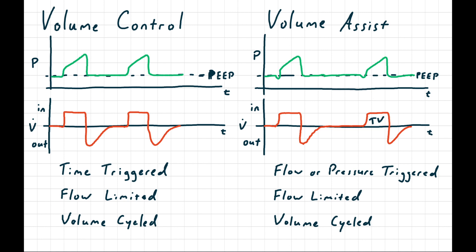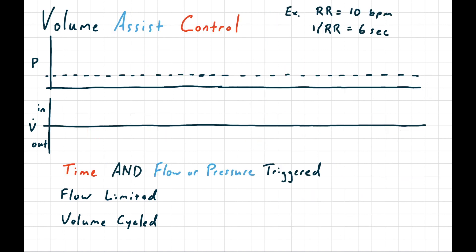In real life, you'll almost never see a pure assist mode. Instead, you'll see assist control modes. Assist control means the ventilator will have a flow or pressure trigger to detect patient-initiated breaths, but there's also a respiratory rate-based timer trigger that will start a breath if the patient doesn't initiate one.